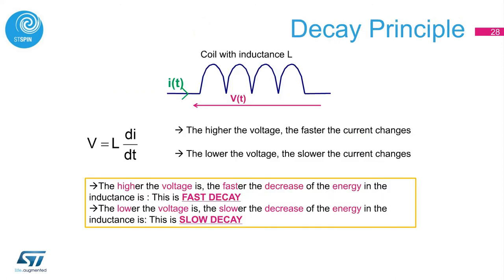The decay principle comes from a simple equation: V = L × dI/dt. The higher the voltage, the faster the decrease of energy in the inductance — this is called fast decay. The slow decay definition is: the lower the voltage, the slower the decrease of energy in the inductance.